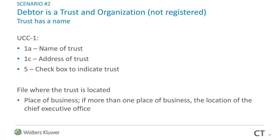Trust scenario two: the debtor is a trust, the organization is not registered, but the trust has a name — such as the Dan Lias Trust. On your UCC-1 box 1A, enter the name of the trust and the address of the trust, and check box 5 to indicate it is a trust. File where the trust is located — that's the place of business, and if there is more than one place of business, file at the location of the chief executive office, which is essentially wherever they cut the checks.